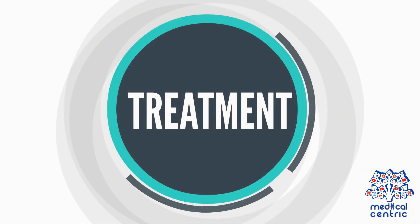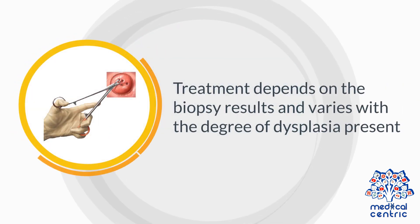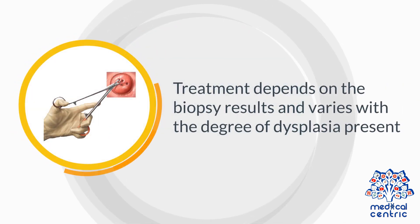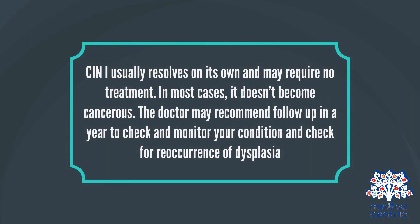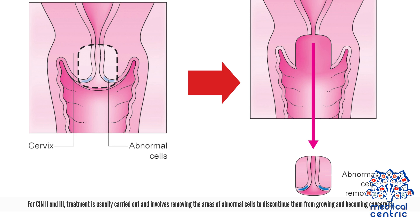Treatment depends on the biopsy results and varies with the degree of dysplasia present. CIN-1 usually resolves on its own and may require no treatment — in most cases, it doesn't become cancerous. The doctor may recommend follow-up in a year to check and monitor your condition and check for reoccurrence of dysplasia. For CIN-2 and 3, treatment is usually carried out and involves removing the areas of abnormal cells to prevent them from becoming cancerous.